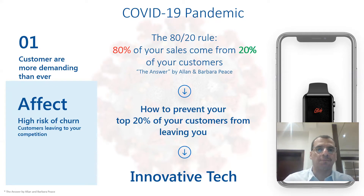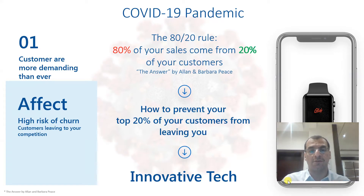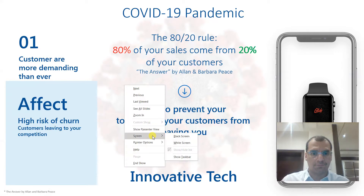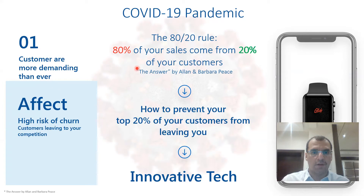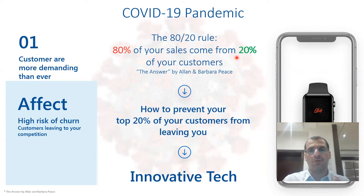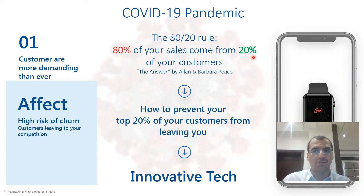The 80/20 rule comes from the book 'The Answer' by Allan and Barbara Pease — a great book based on a true story about the ups and downs of running a successful enterprise, losing everything, and building it back from the ground up. In one chapter they discuss the 80/20 rule: 80% of your sales revenue is coming from 20% of your customers. That is a huge and massive ratio.